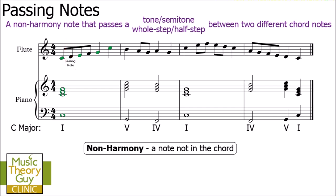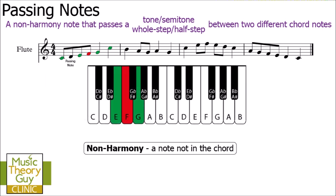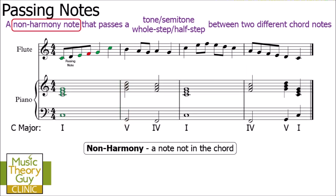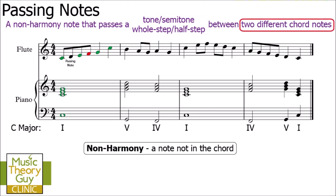Let's also look at the note F, which is also not a chord note. On the keyboard, it is a semitone from E to F and a tone from G down to F. So we can say it is a non-harmony note that passes a tone or semitone between two different chord notes — and again, we can say that this F is a passing note.